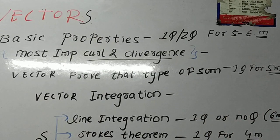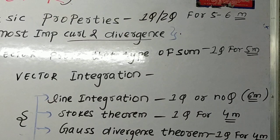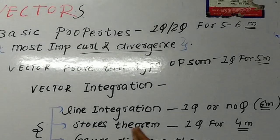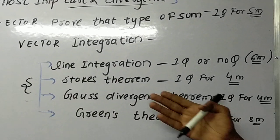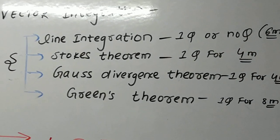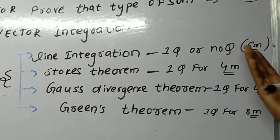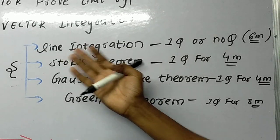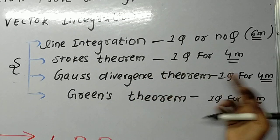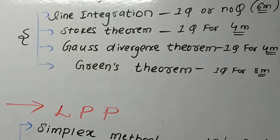Vector prove-that type — one question for five marks. For vector integration there are three to four topics or theorems: line integration — one question carrying six marks, or possibly no question. Stokes' theorem — one question for four marks. Gauss divergence theorem — one question for four marks. Green's theorem — one question for eight marks.